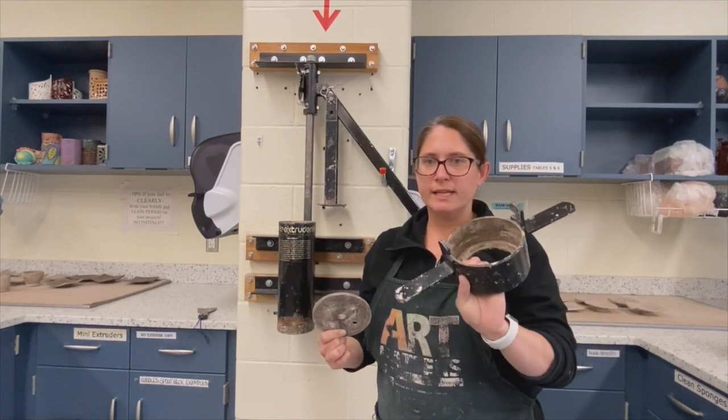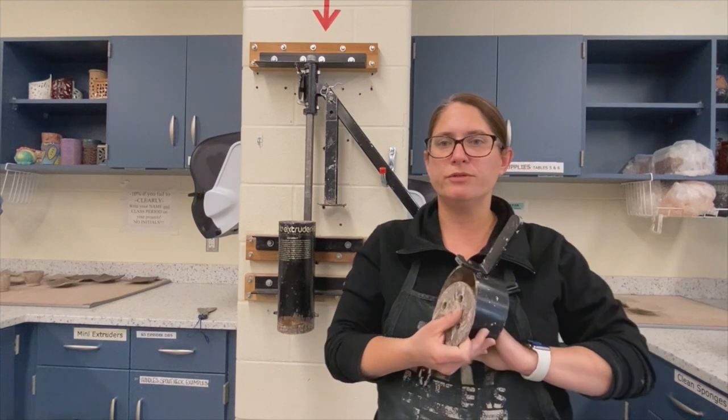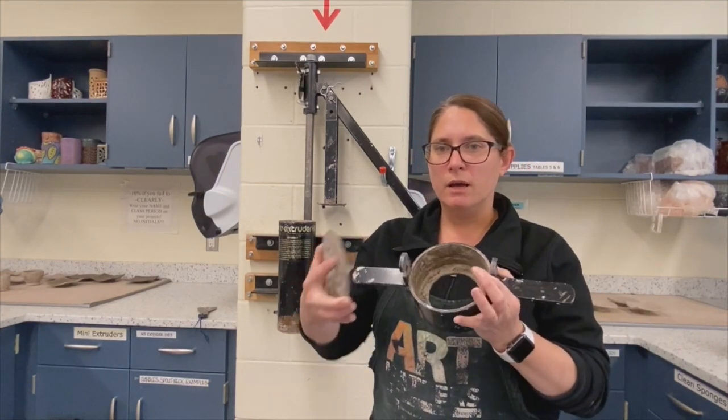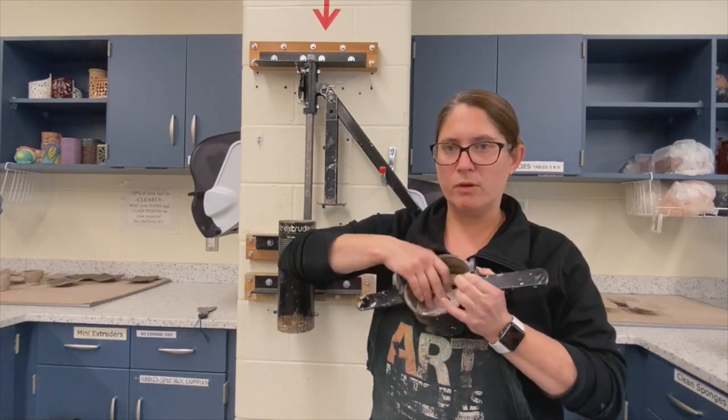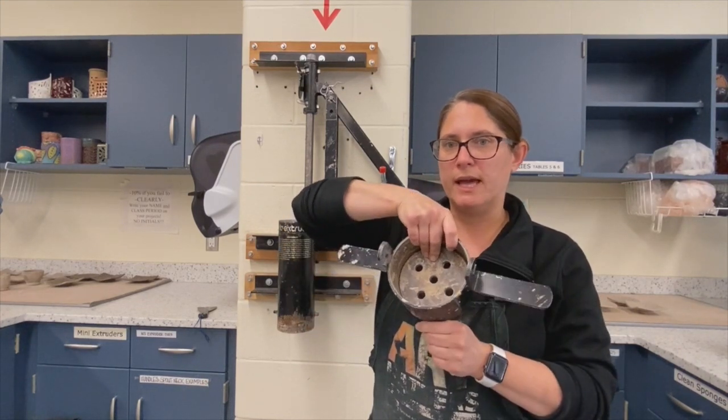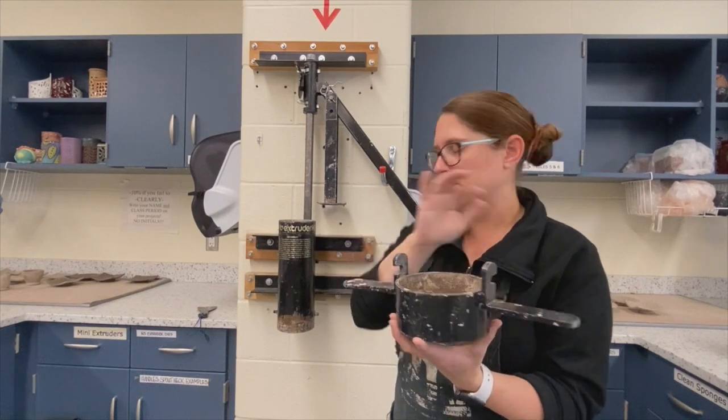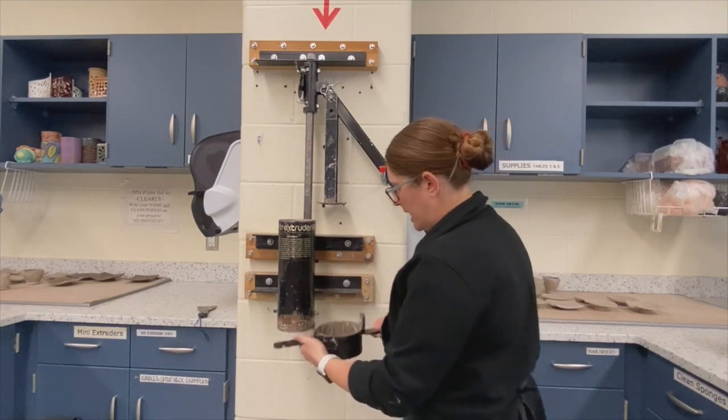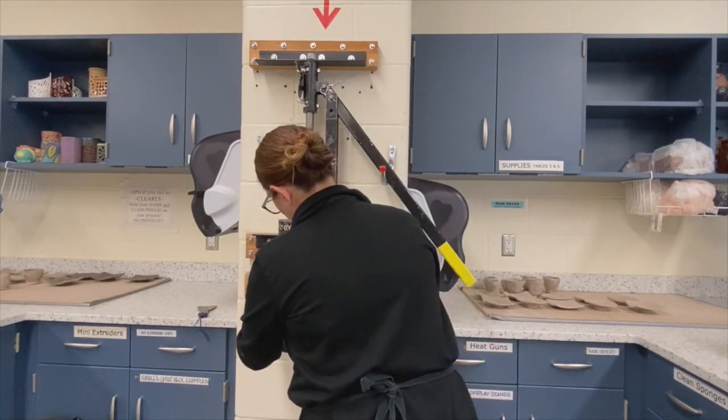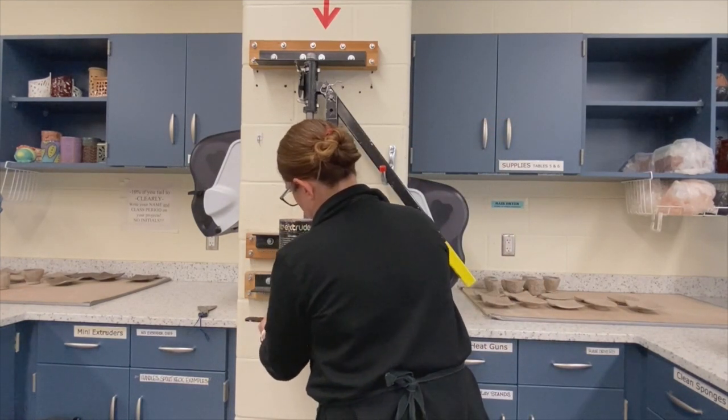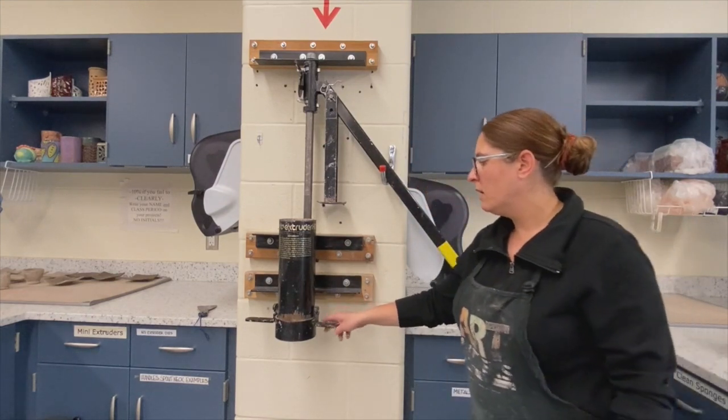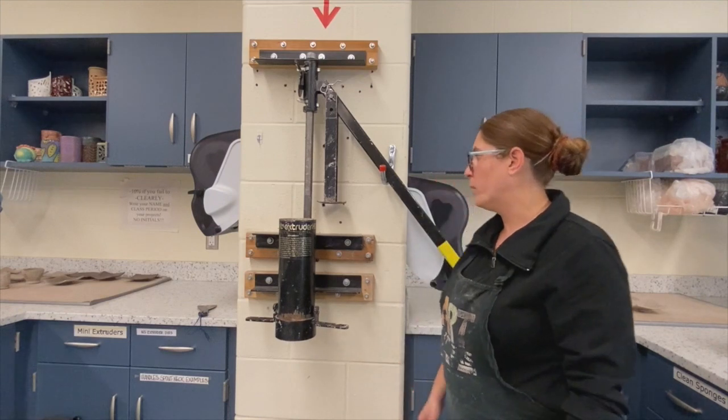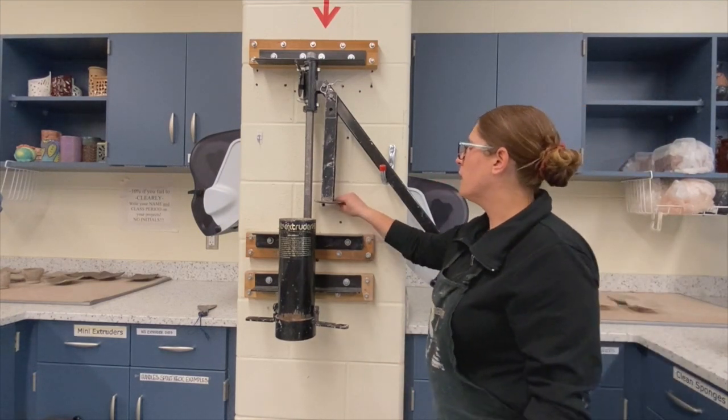The extruder is going to force the clay through these holes to give us coils, and that just sits right inside of here. So if you ever have to take this apart, maybe to clean it or if something gets stuck, this will just set right inside like that. Then this just attaches to these little bolts that are sticking off the side. You do want to make sure that this is attached well before you try to put clay in it, or the clay is just going to push that right off onto the floor.